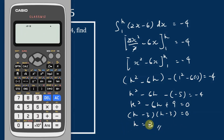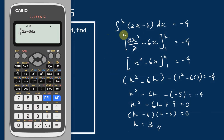Now let's use the Casio FX570EX ClassWiz calculator to verify our answer. We key in the integration of (2x minus 6) from 1 to 3 — because we found h equals 3 — and press equals. The answer is negative 4, which confirms our answer is correct.